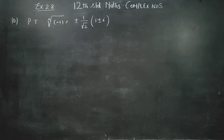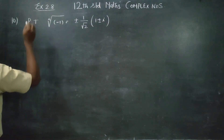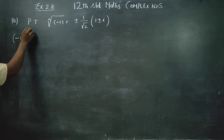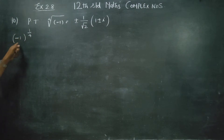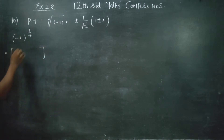Hello 12th standard students. In exercise 2.8, sum number 10 — the last sum of the exercise. The problem is minus 1 to the power 1 by 4. We have to find the nth root — specifically the 4th root — of the complex number minus 1. The answer should be in polar form.